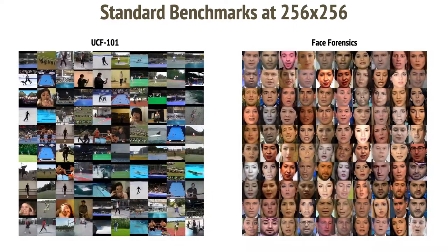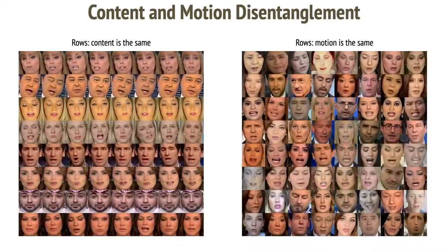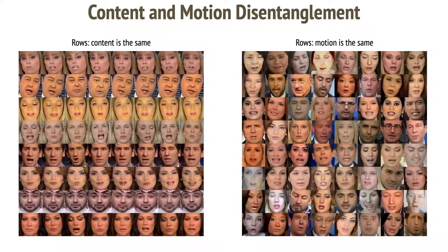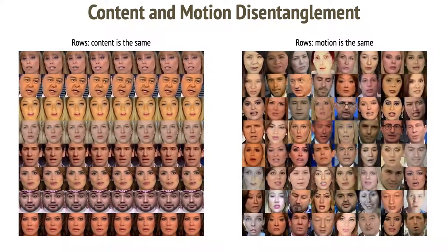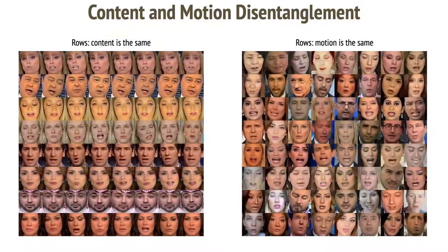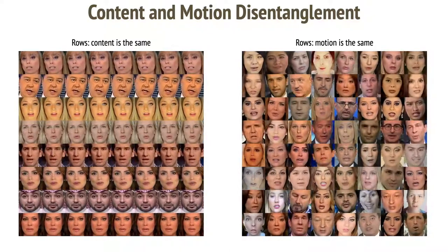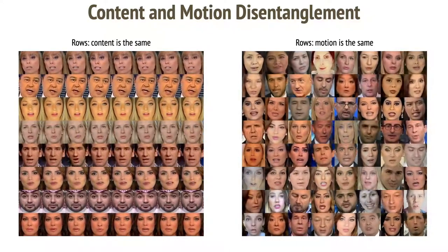We can run standard benchmarks at 256 and show results significantly better than the state of the art. But let's see if we can do something more interesting. We can do content and motion control generation, similarly to MocoGAM. In the left, in each row the content is the same. In the right, in each row the motion is the same. That's interesting.